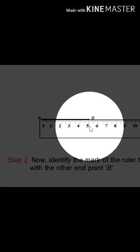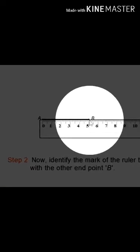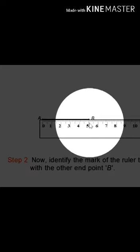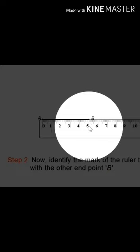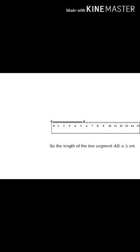The mark on the scale at B is 5. So, we can say that the length of the line segment AB is 5 cm.